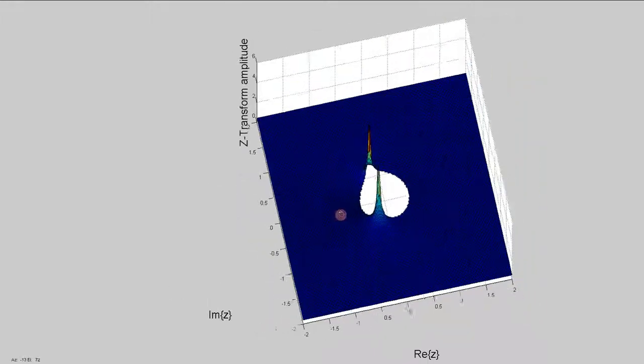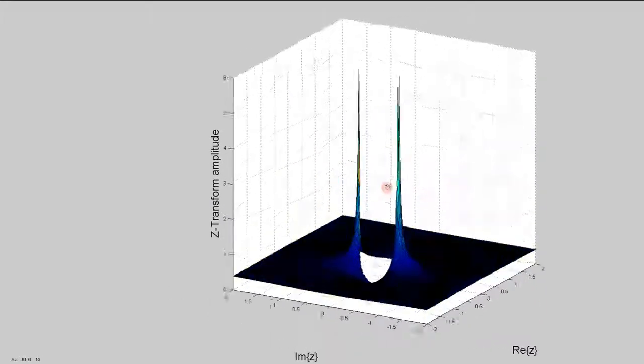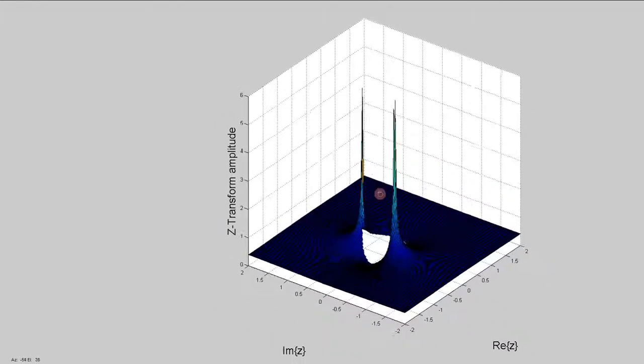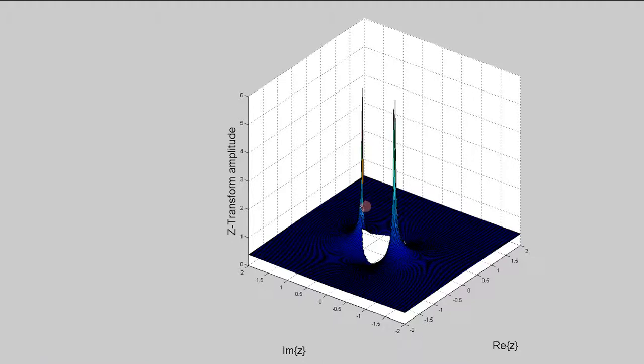We can also turn it on its side and see we have values for every value of Z that's in the region of convergence, with this explosion happening at the poles and the function going to zero at the zero locations. It's defined everywhere outside as well.